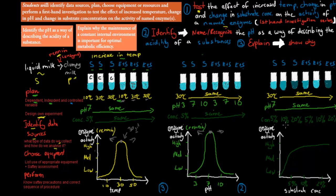When substrate concentration was changed — for example, 5%, then 10%, then 20% — the results showed that going from 5% to 10% there was more activity and more clumpiness. But at 20%, at some point it just plateaued, because the enzymes were being so overused that any further increase in concentration had no effect on the actual enzyme activity — they were all already being used.